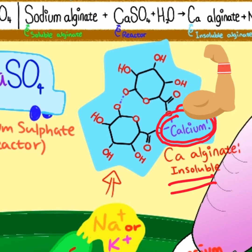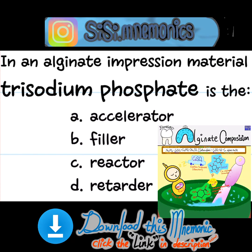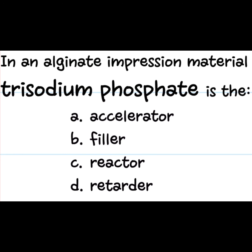Let's answer this question: In an alginate impression material, tri-sodium phosphate is the — A, accelerator; B, filter; C, reactor; D, retarder. Which one is the answer? As we remembered, tri-sodium phosphate — Na, na, na, four, 포, or na, na, po. Remember the Teletubbies? She was very sleepy. So the answer is letter D, retarder.